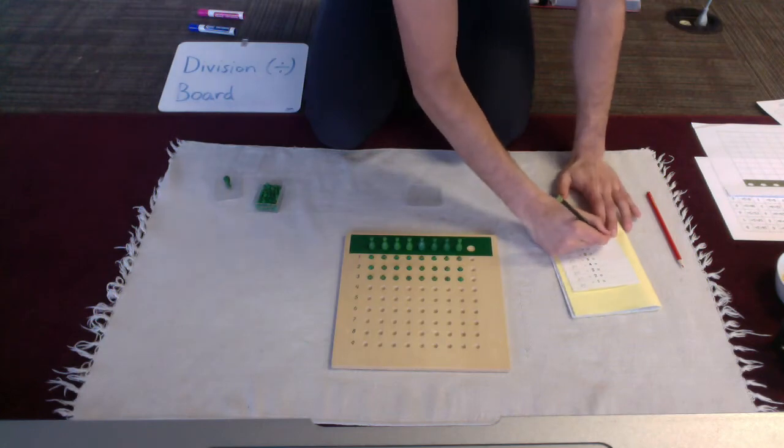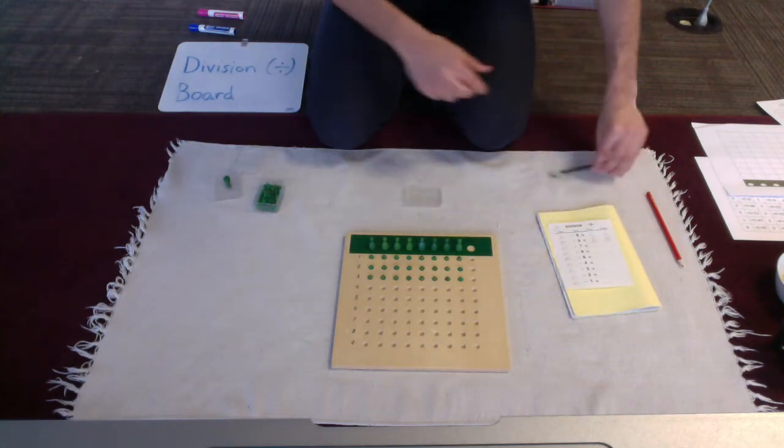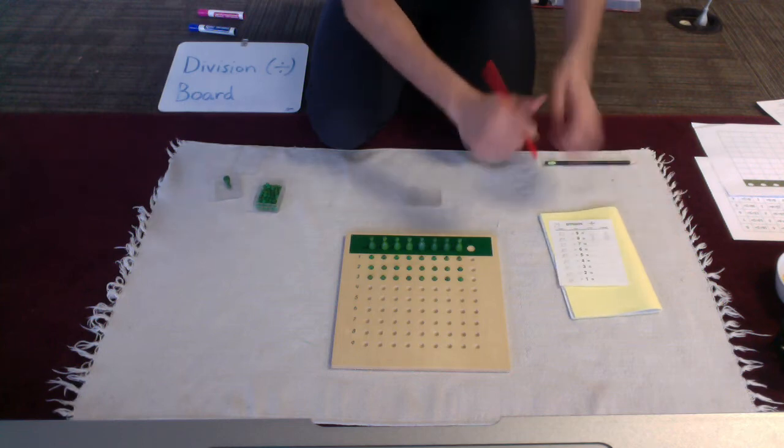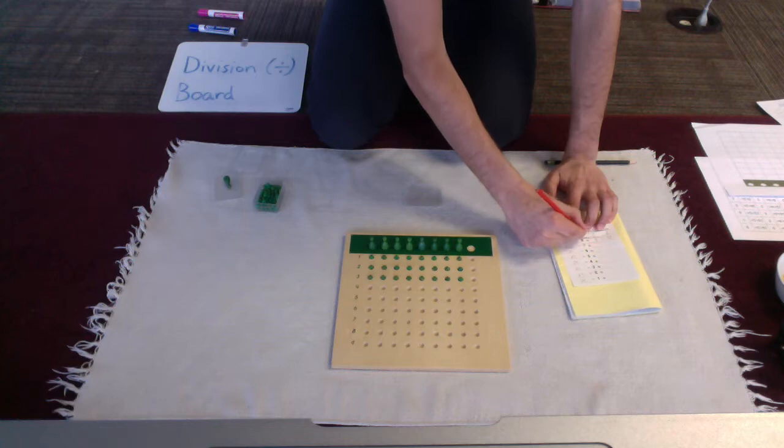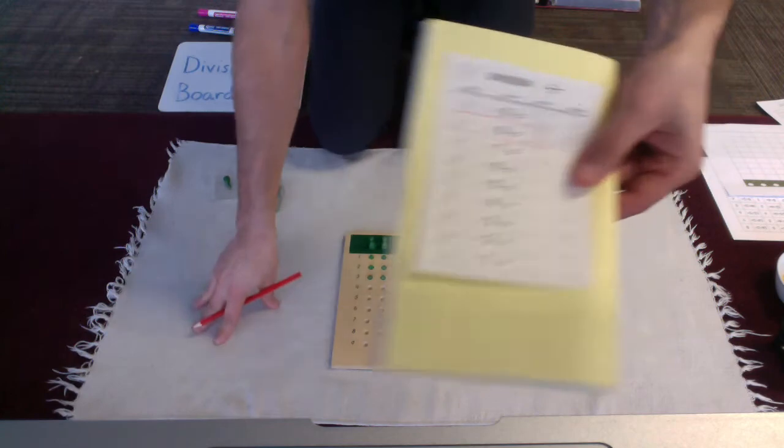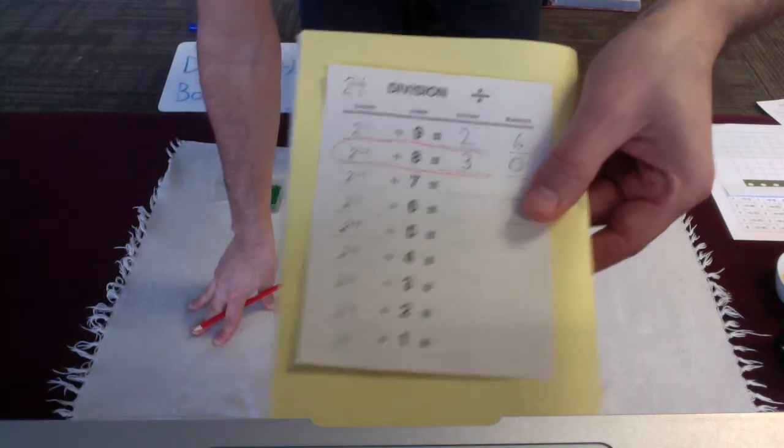Just like that. Now, since that one resulted in a quotient with 0 of a remainder, I'm going to circle in red this equation. Because that, 24 divided by 8 equals 3, that's a math fact.